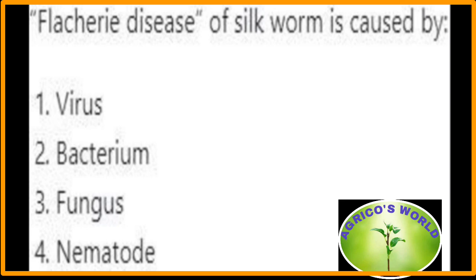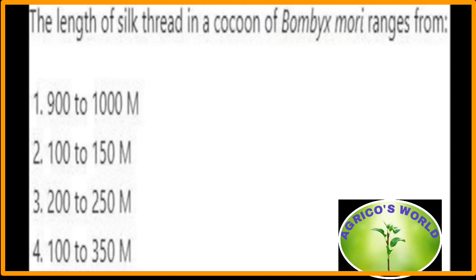Flacherie disease of silkworm is caused by bacteria. Flacherie is a bacterial disease of the digestive organs; the affected larvae void foul-smelling semi-solid excreta. The length of silk thread in a cocoon of Bombyx mori ranges from 900 to 1000 metres.